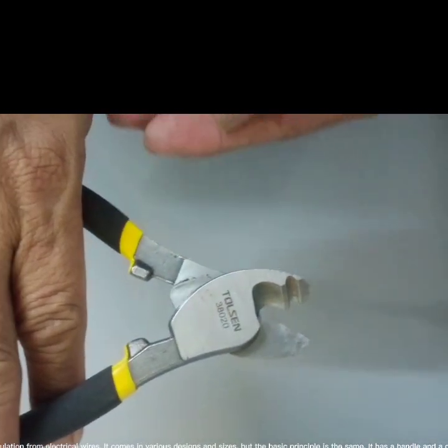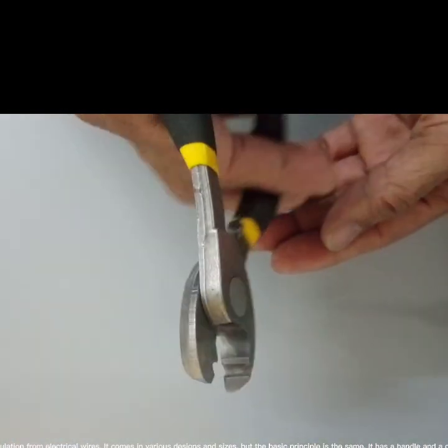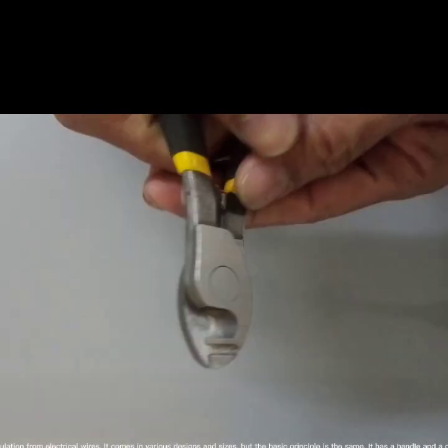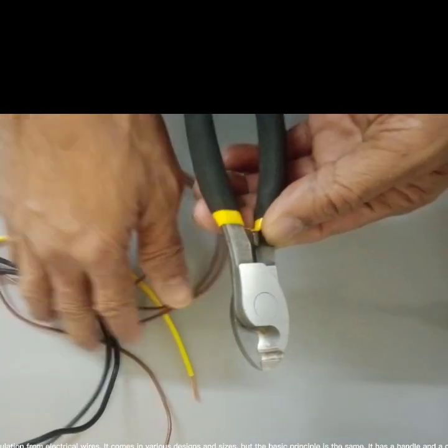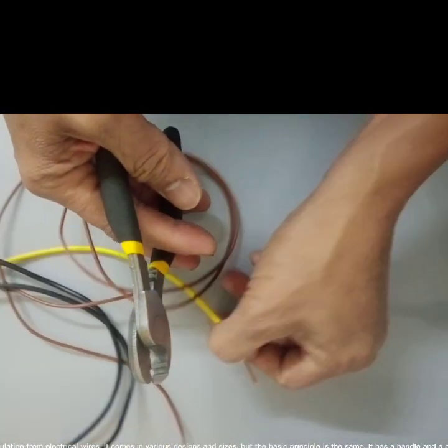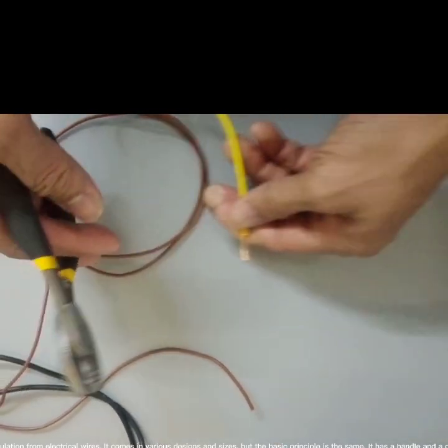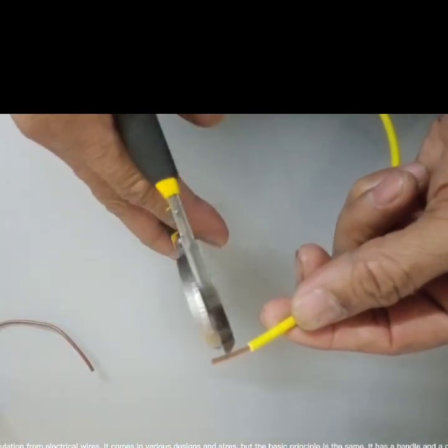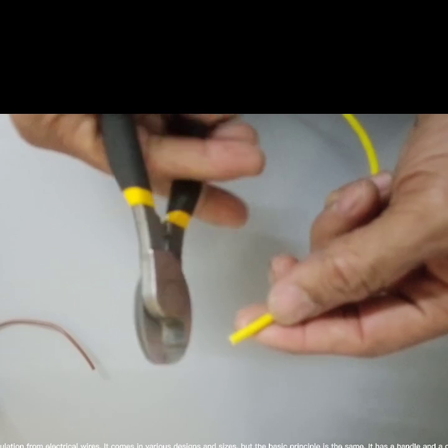A wire stripper is a tool used to remove the insulation from electrical wires. It comes in various designs and sizes, but the basic principle is the same. It has a handle and a cutting blade that is used to strip the insulation off the wire.